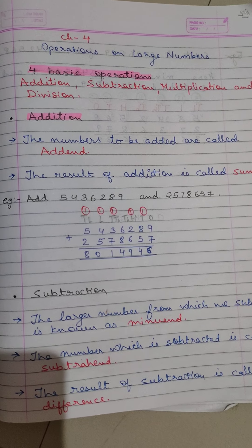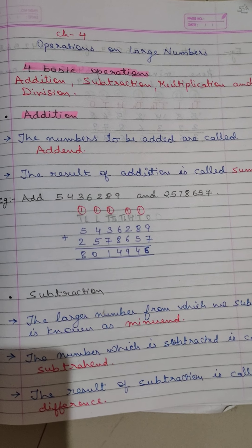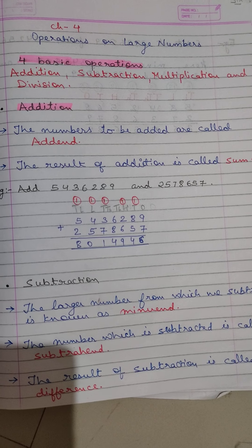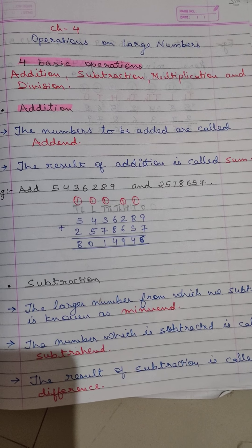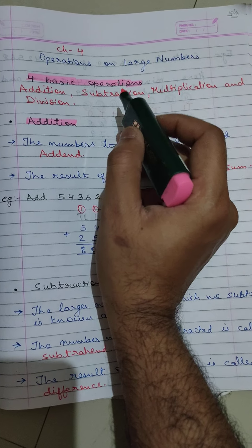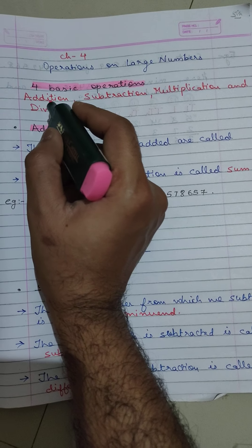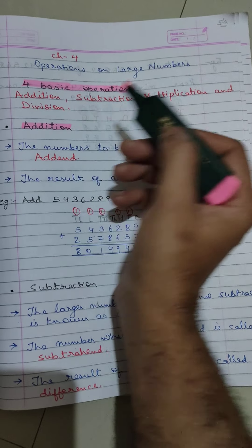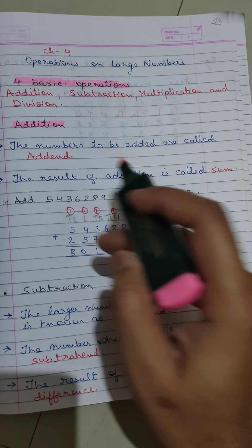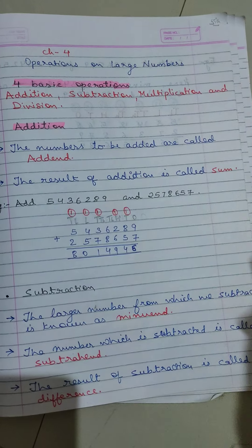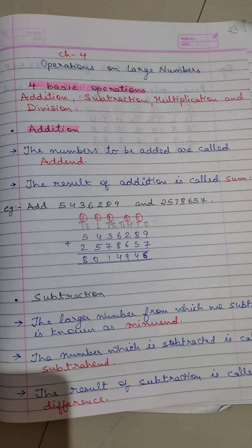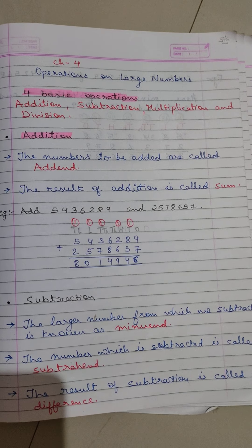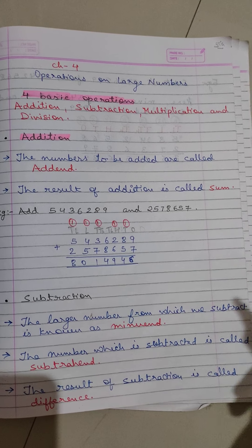Good morning students. Today we will be discussing the topic: operations on large numbers. There are four basic operations on large numbers — addition, subtraction, multiplication, and division. Now let us move on to the first one, that is addition. Before starting the actual addition, we will see a few key points which we need to remember.